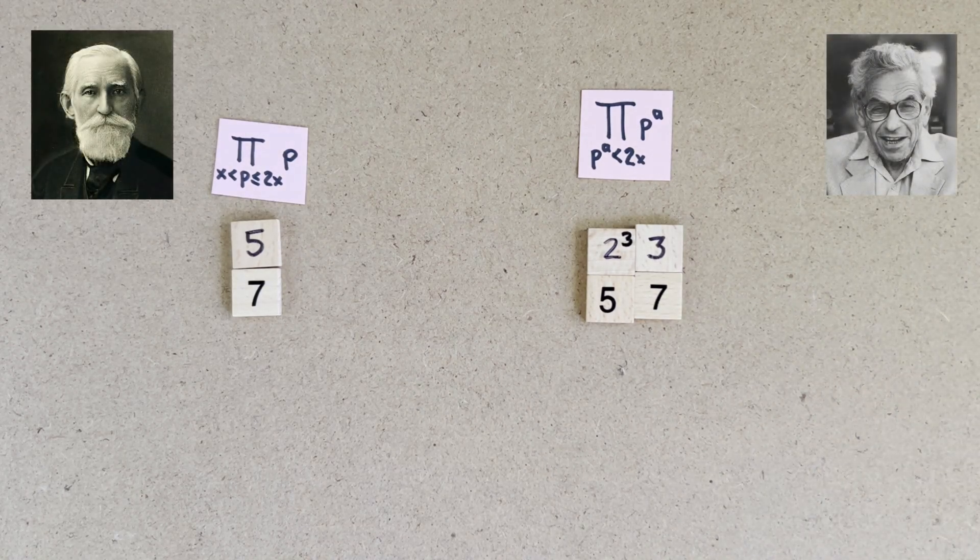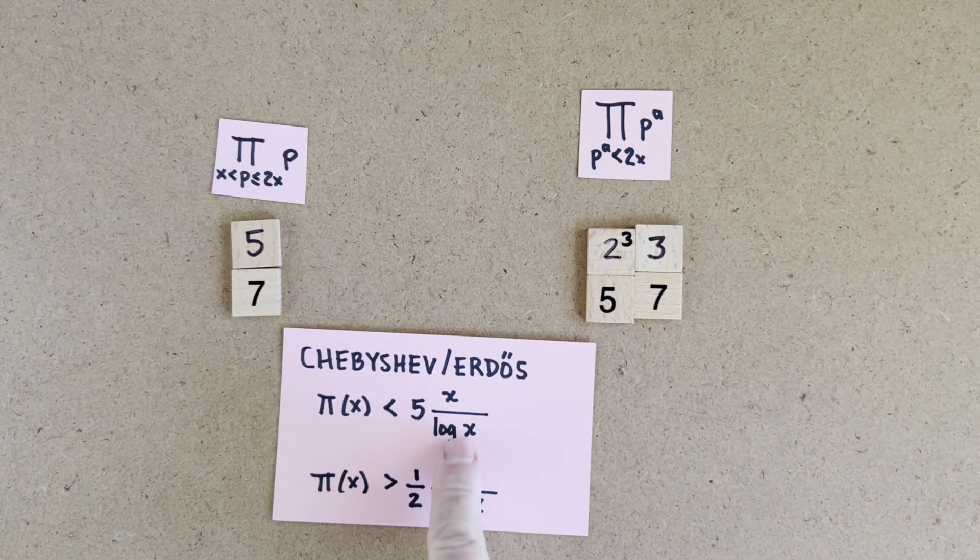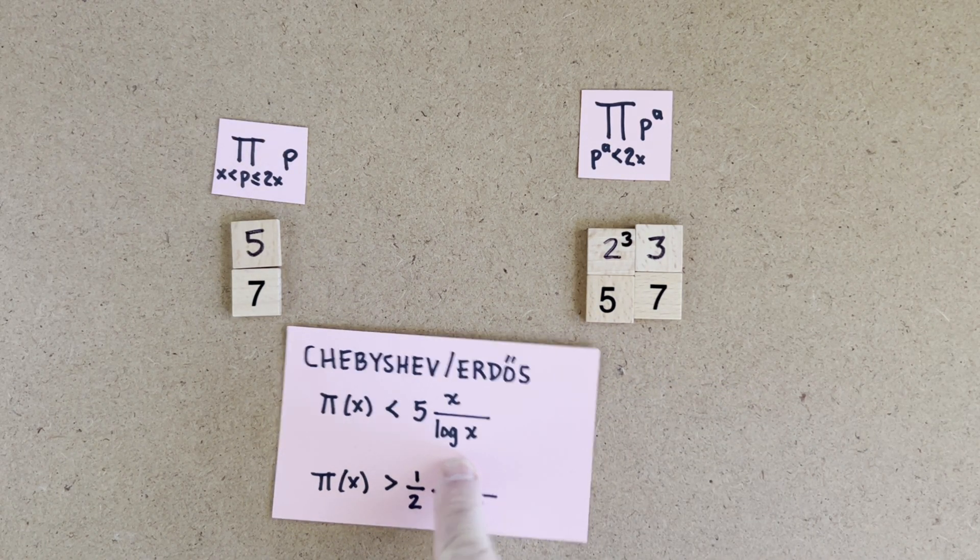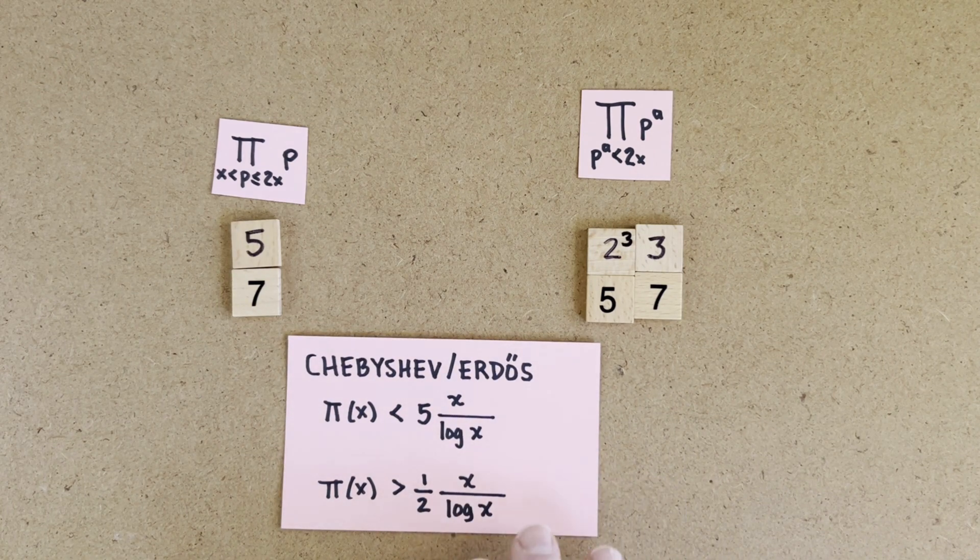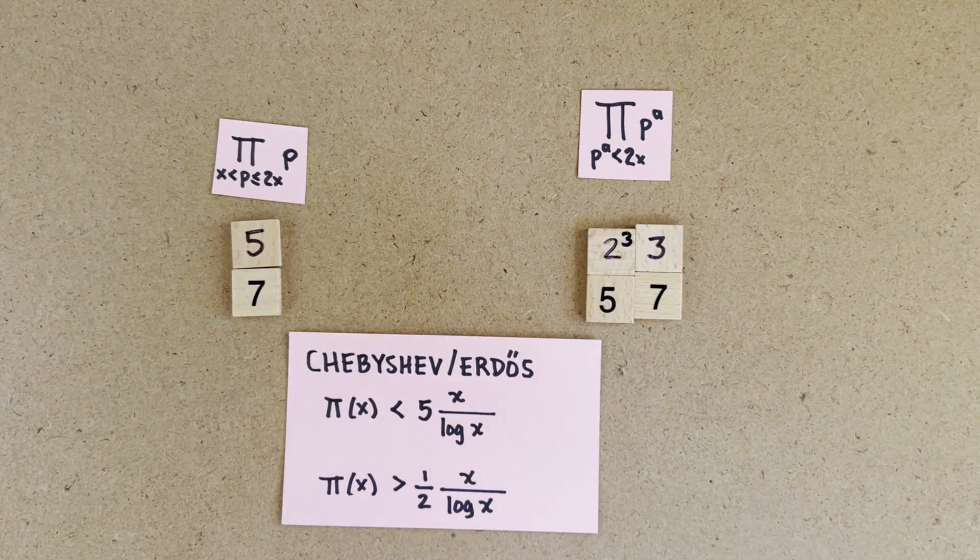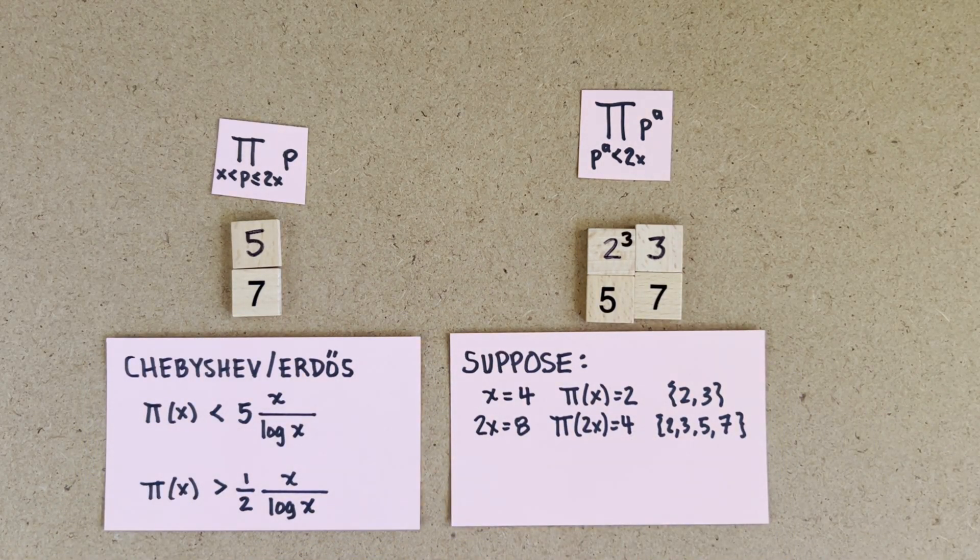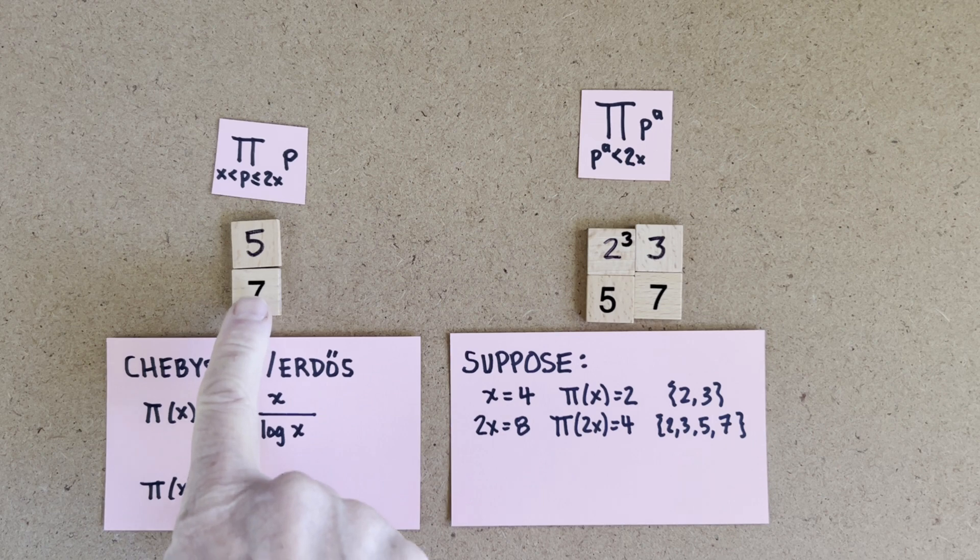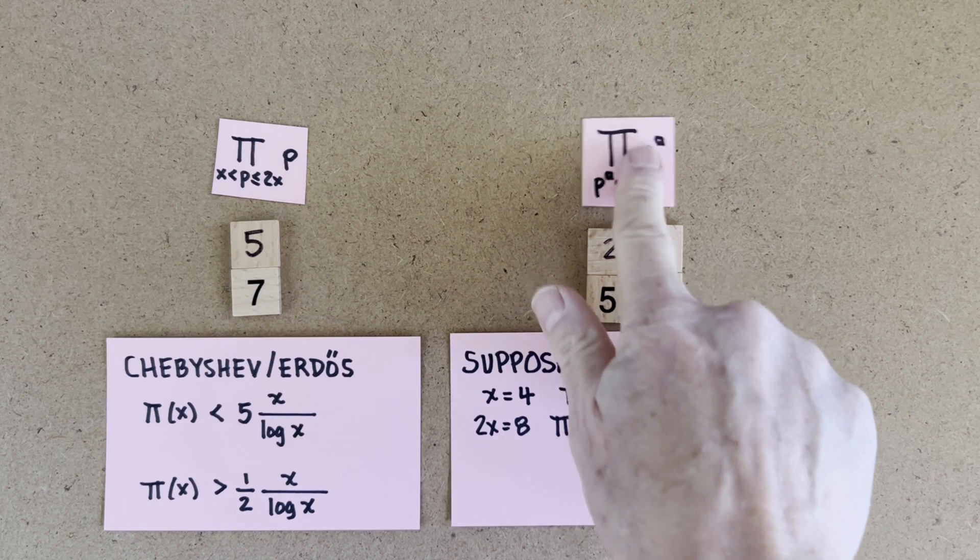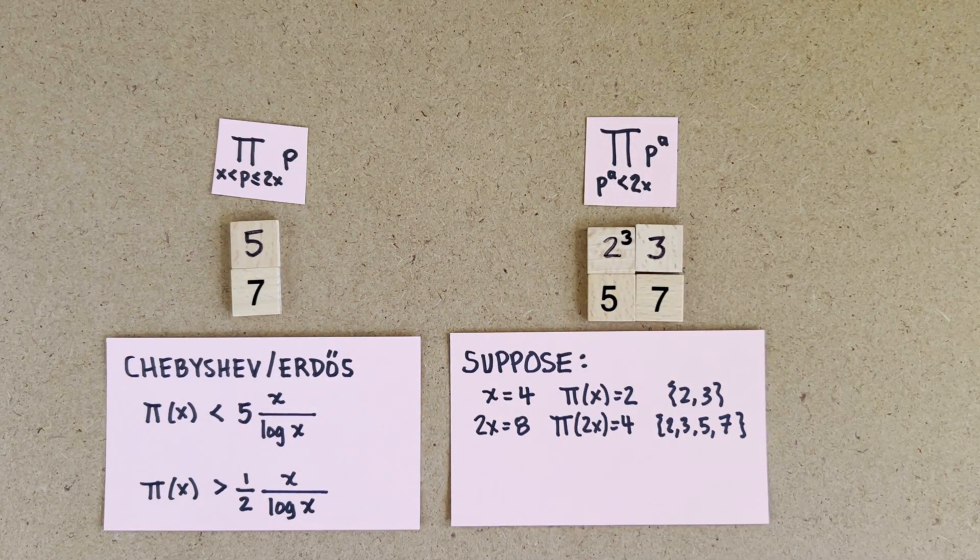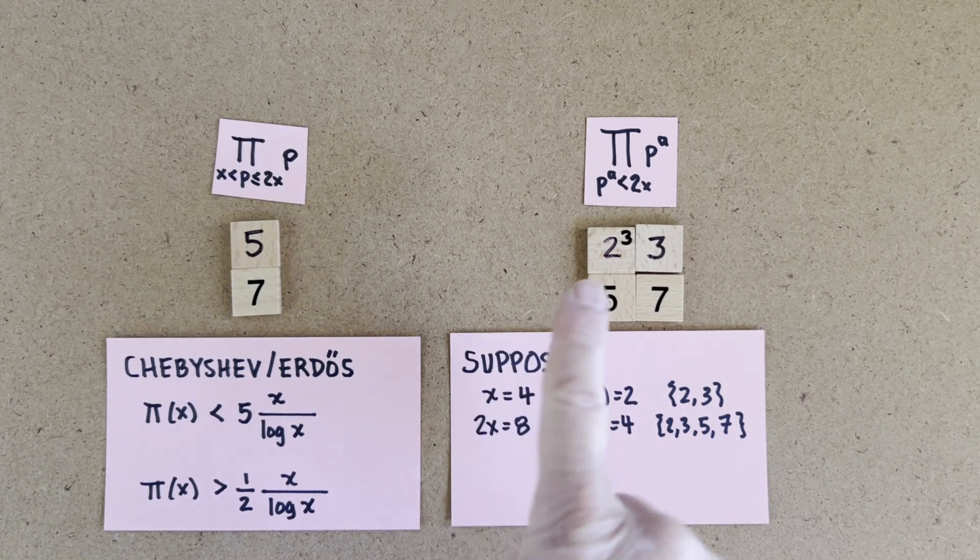Luckily, Chebyshev and Erdős did better. So x over log x is basically x divided by the number of digits in x, which is way more accurate. Their idea is to consider all the primes up to 2x. So suppose x is 4 and 2x is 8. Here we make a product out of all the primes between x and 2x. That's 5 and 7. And here we take the primes between 1 and 2x and raise each of them to the highest power that keeps them under 2x.